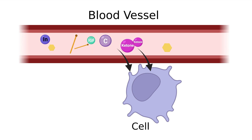Hormones like cortisol will increase, insulin will decrease. Meanwhile, growth factors like insulin-like growth factor will reduce. Also, molecules like glucose reduce, and more fats are taken up by your cells for energy. This ultimately signals the inside of your cells of a low-energy environment.